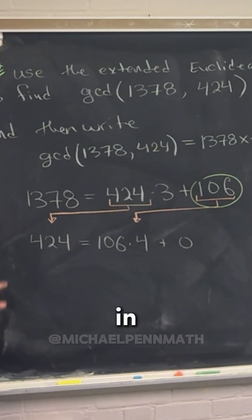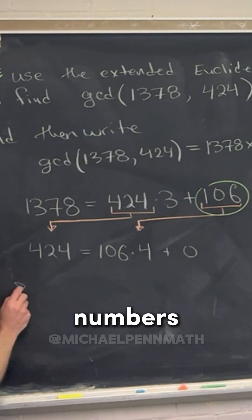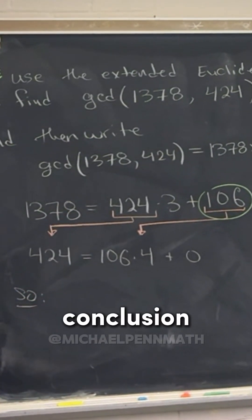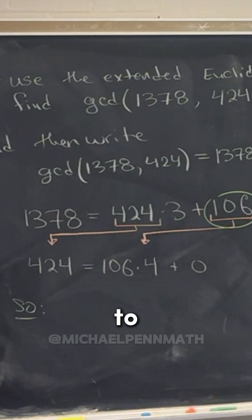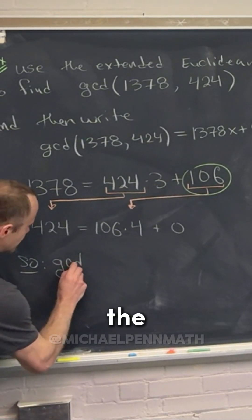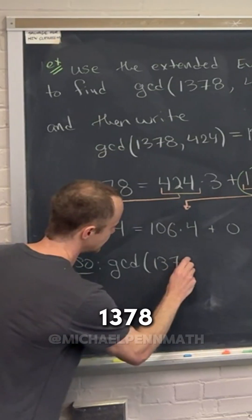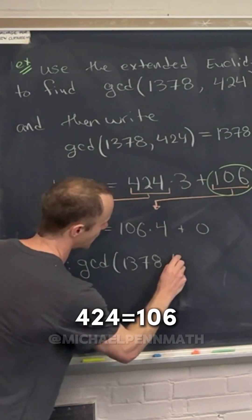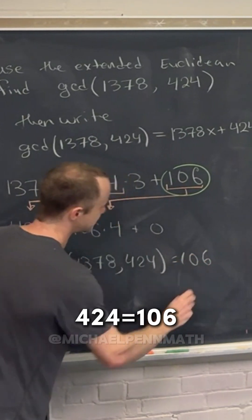Let's put our conclusion here and then we'll do another one just to have it be a little more interesting. So anyway, what we get here is the GCD of these two numbers, 1378 and 424, is 106.